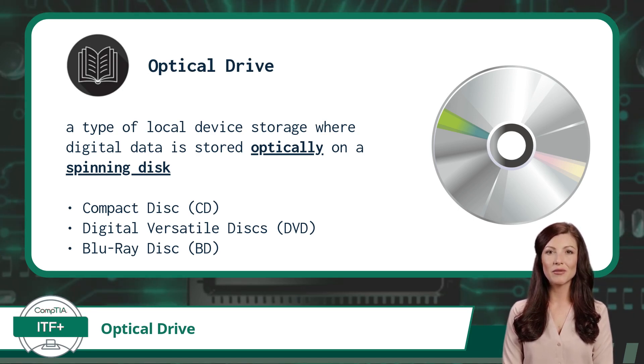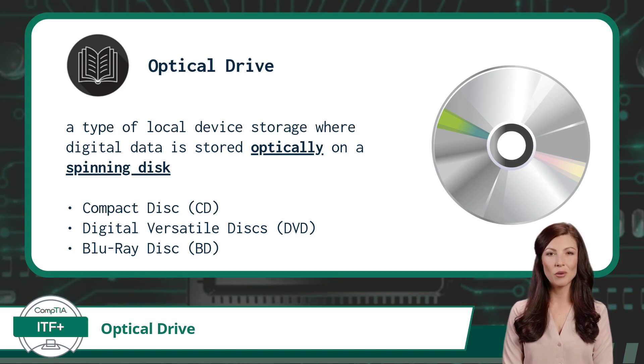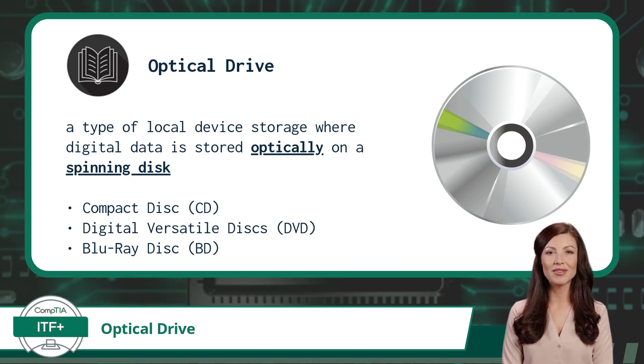The three main types of optical disks are CDs or compact disks, DVDs or digital versatile disks, and Blu-ray disks.